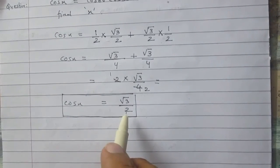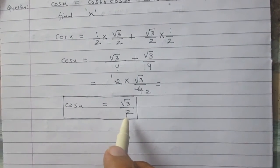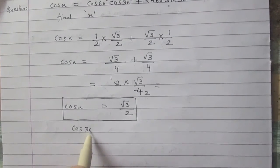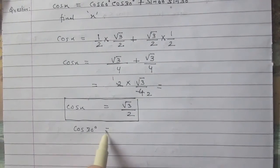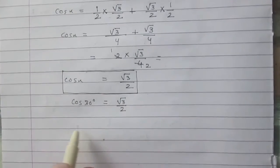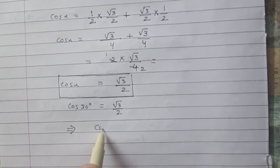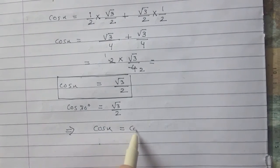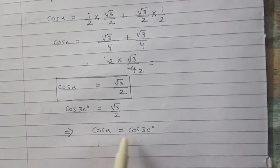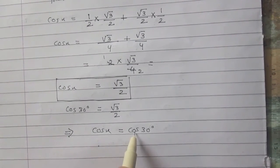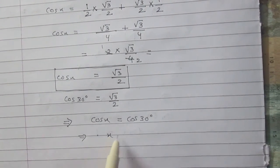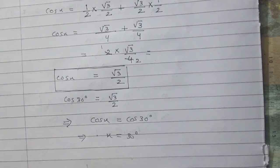We know that cos 30° = √3/2. Since cos x = √3/2 = cos 30°, and the operators are the same, comparing both results gives us x = 30°.